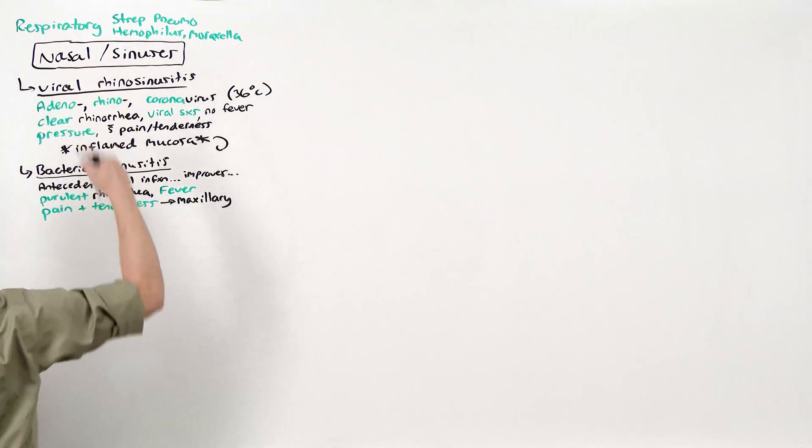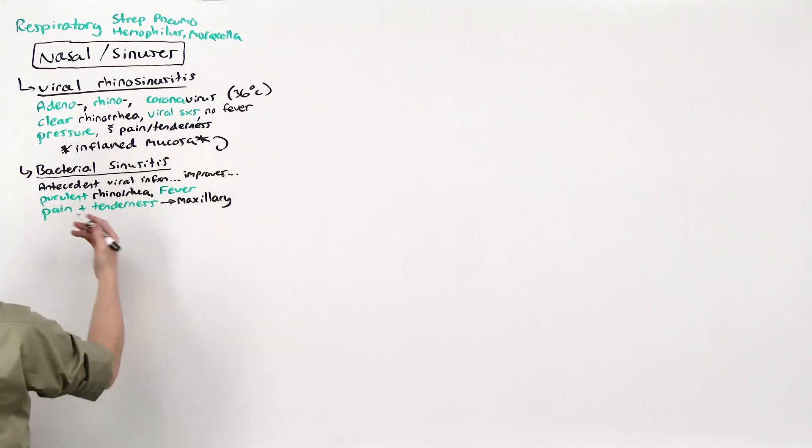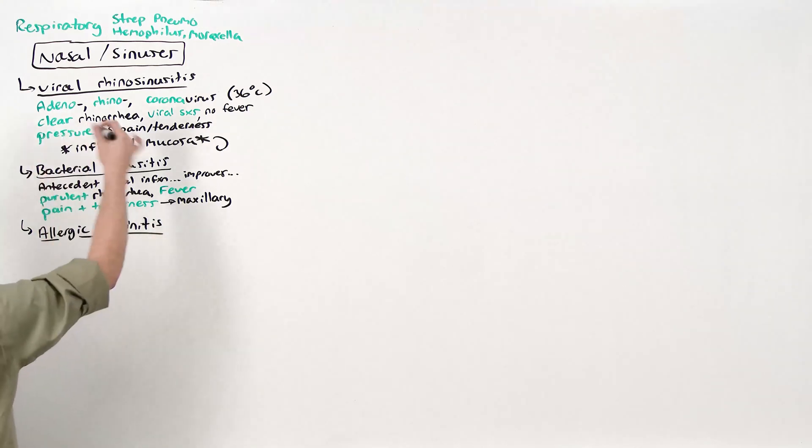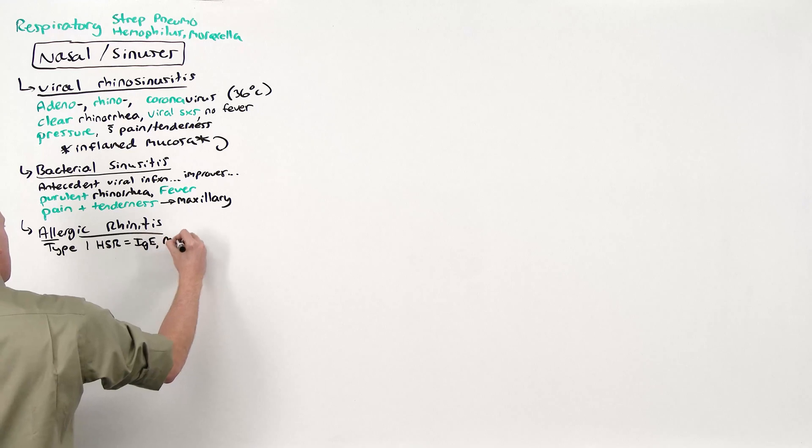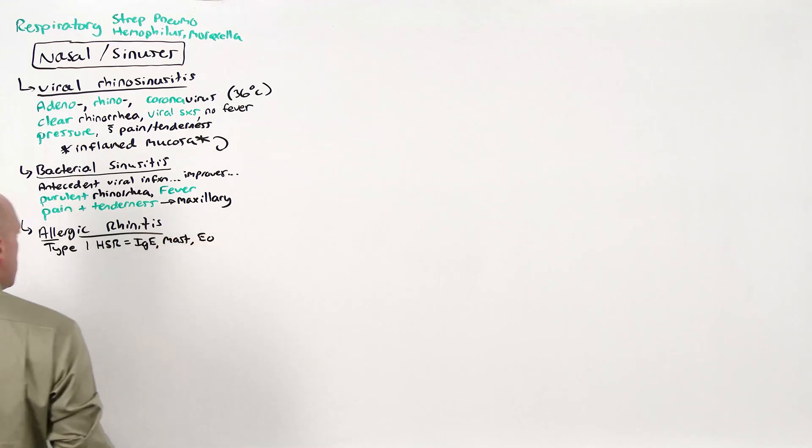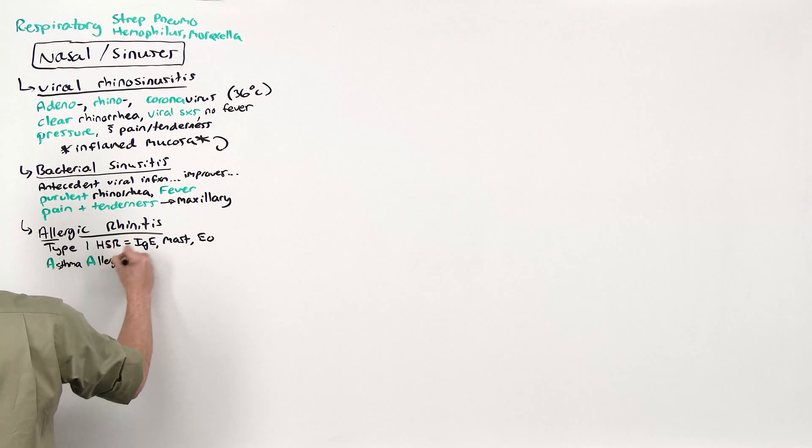Now, if you have the viral rhinosinusitis picture, but no viral symptoms, and it happens to you all the time, that sounds like allergic rhinitis. It's going to be the clear rhinorrhea without the viral symptoms, without fever, without pressure. Allergic rhinitis is a type 1 hypersensitivity reaction, which means IgE, mast cells, and eosinophils. Sounds a lot like asthma, and indeed, it is often found with the A's: asthma, allergies, and atopy.